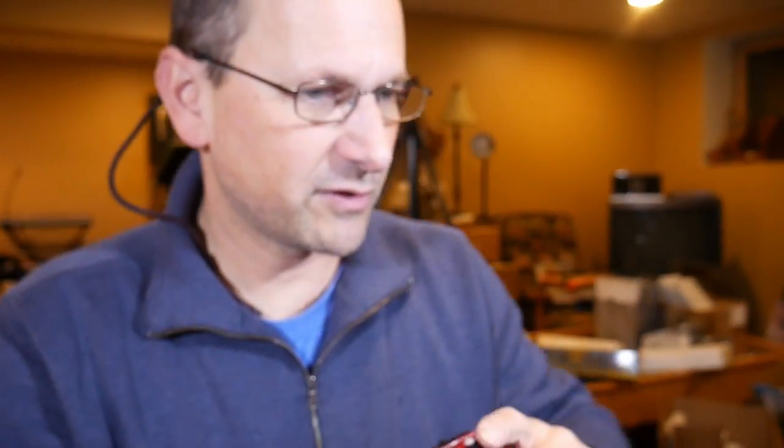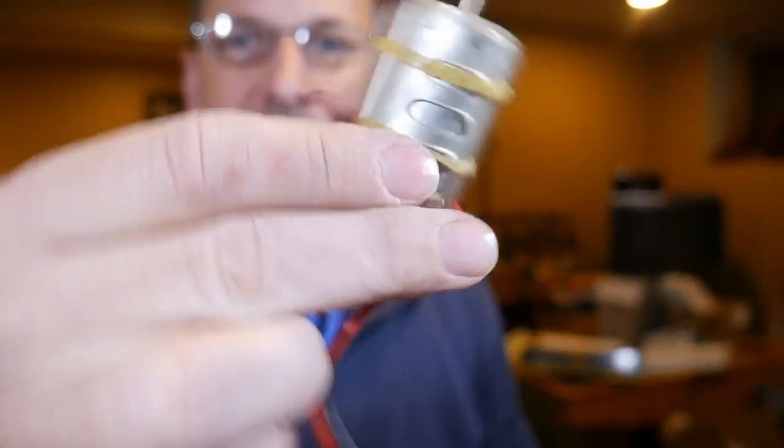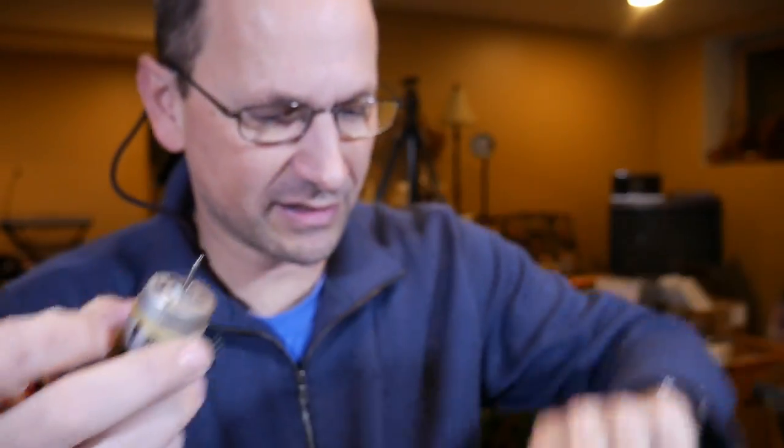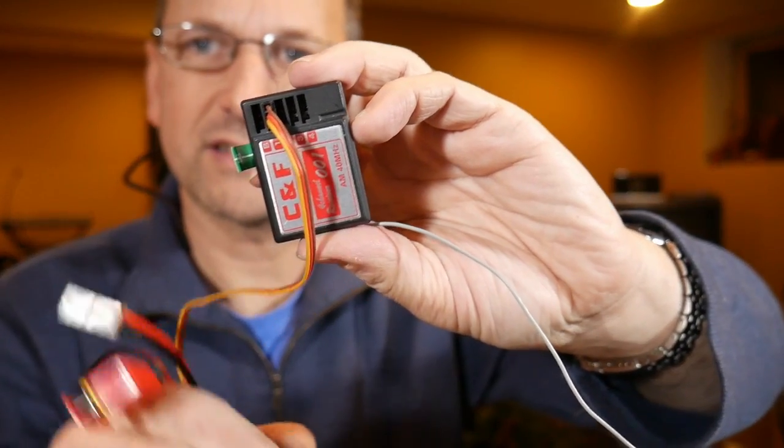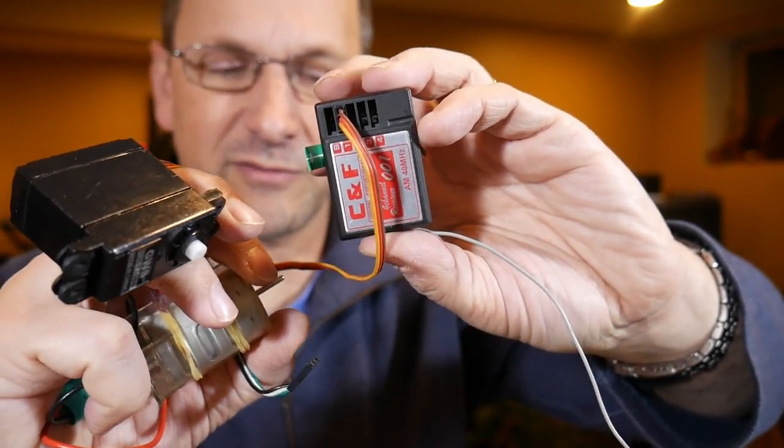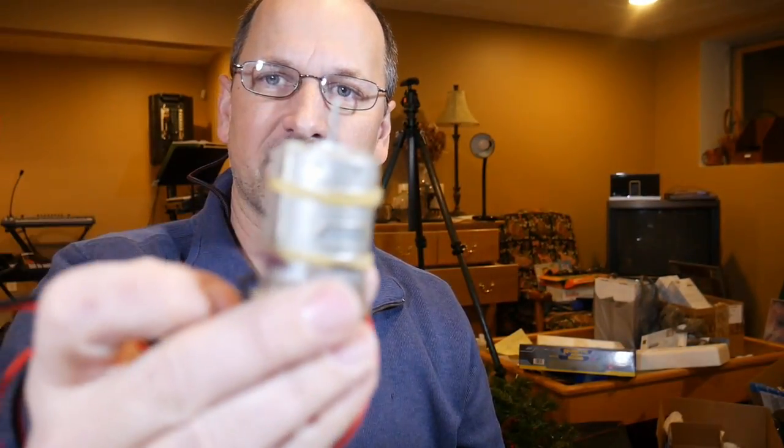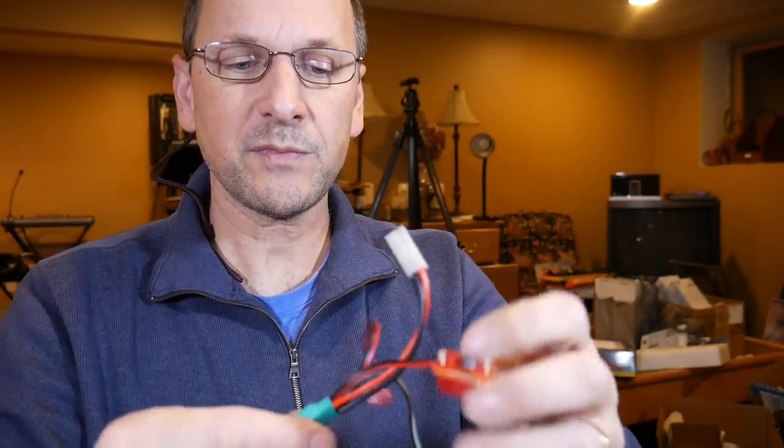So how do we get to 6 volts is the question. In RC land, a lot of the time you are powering things like servos. I pulled out the guts of a little plane here. It had two servos in it, it had a little regular DC motor, and it also had a little receiver, a little RC receiver here.